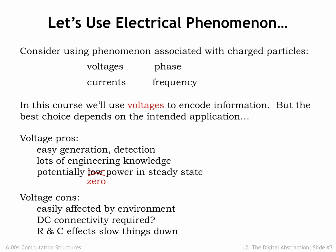However, a voltage-based representation does have some challenges. Voltages are easily affected by changing electromagnetic fields in the surrounding environment. If I want to transmit voltage-encoded information to you, we need to be connected by a wire. And changing the voltage on a wire takes some time, since the timing of the necessary flow of charged particles is determined by the resistance and capacitance of the wire.